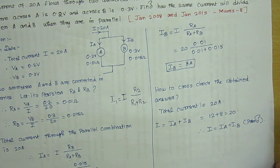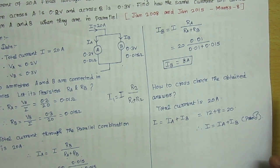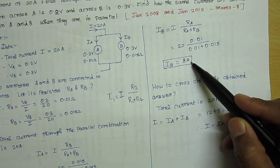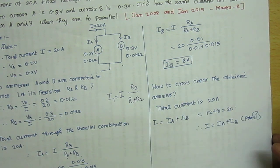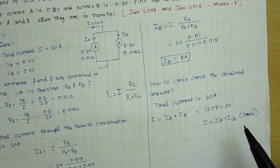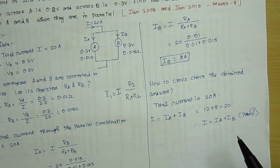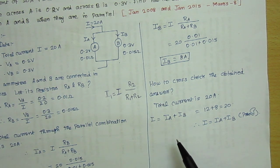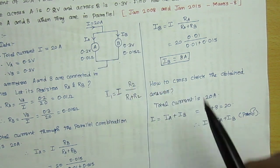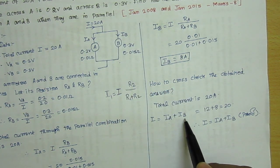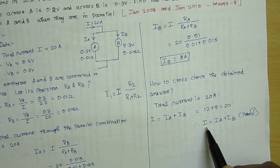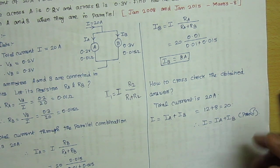Now we verify whether our answer is correct. We use Kirchhoff's current law, which states that input current equals output current. The input current is 20 amps and the output currents are I_A and I_B. So I = I_A + I_B: 12 + 8 = 20 amps. This confirms our answer obeys Kirchhoff's current law. Next, we move to problem 2.